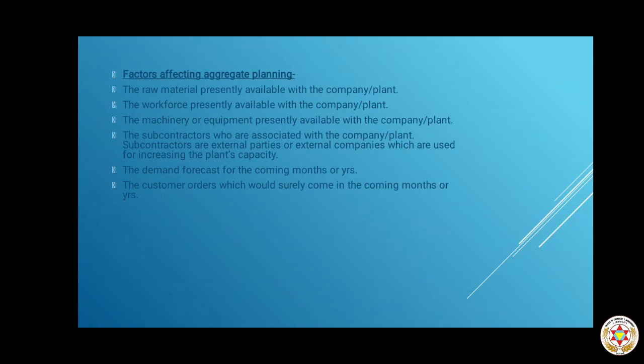The second factor is the workforce presently available with the company or plant. We look at the existing workforce and plan how much additional workforce will be needed over the coming one or two years. The third factor is the machinery or equipment presently available — whether the company owns it or has rented it, it doesn't matter. We look at existing machinery to determine what additional machinery will be required.